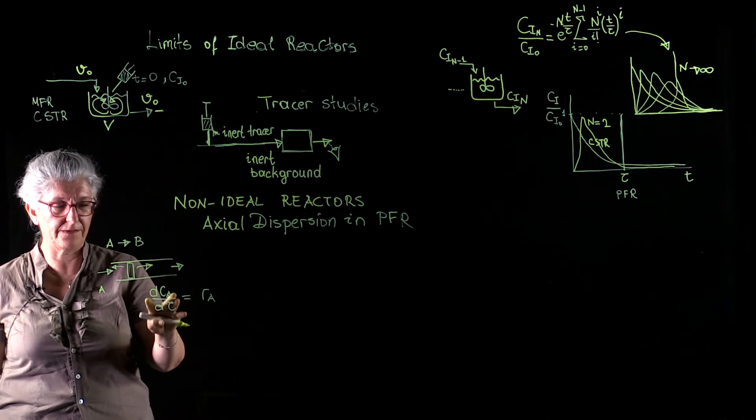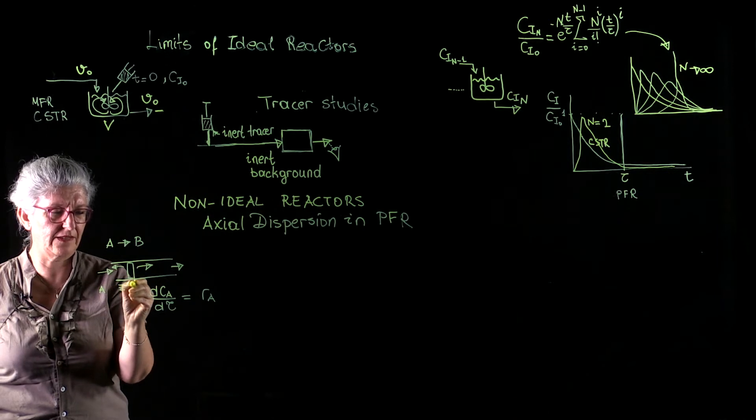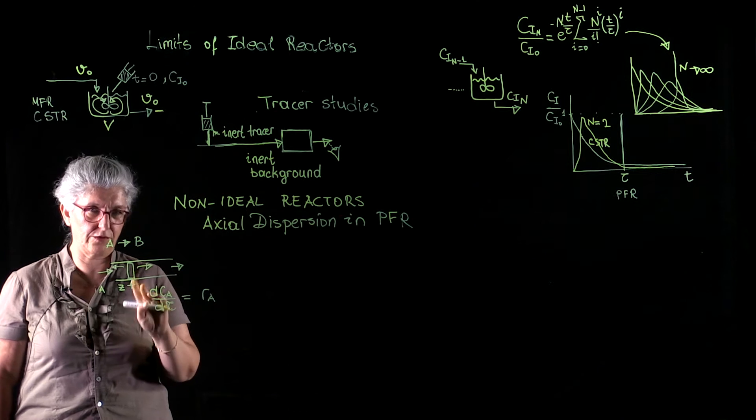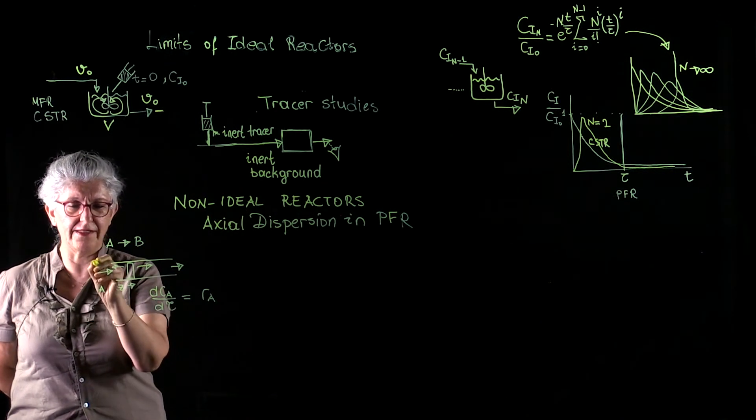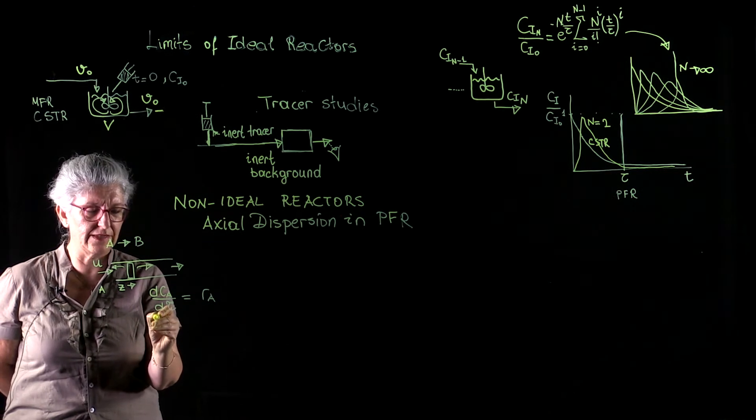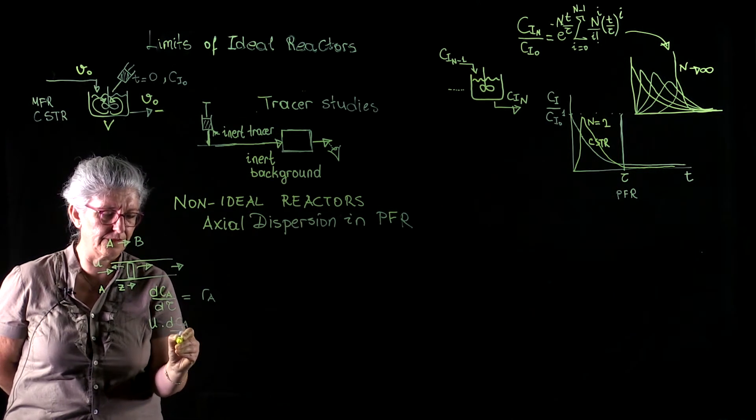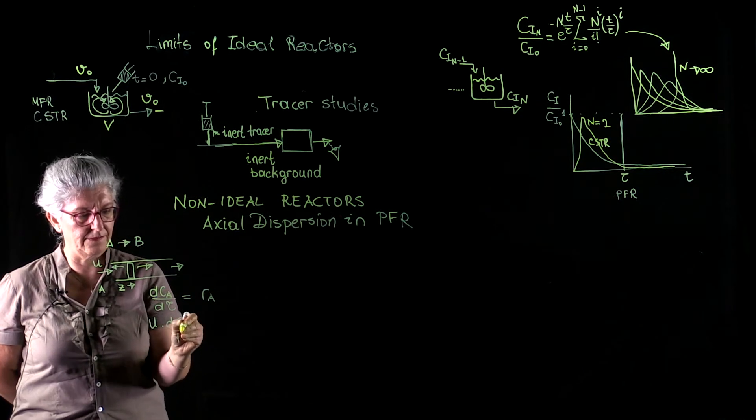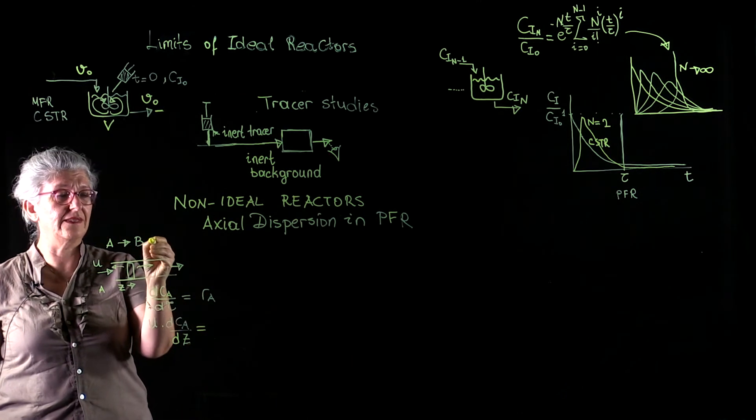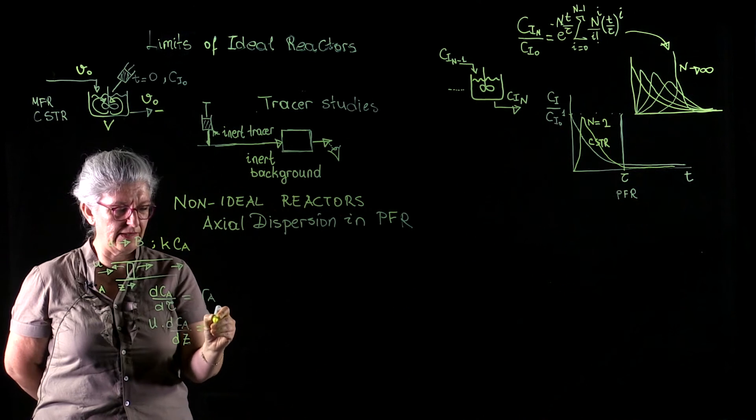Now, let's take this one and make it a function of position. Let's indicate that this is the z-direction. We still have uniform concentrations in the r direction, and we are not going to take that dimension into consideration for the first analysis. So, we are going to have a linear velocity of u in the z-direction. So we are going to rewrite this as u times dCa over dz equal to rA. Let's just have a first-order reaction here for the sake of simplicity in the mathematics.